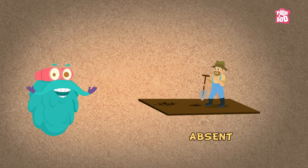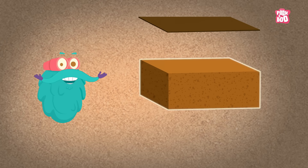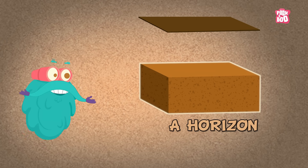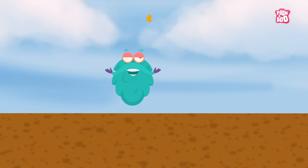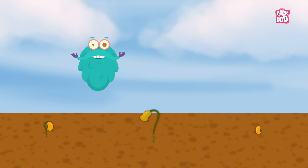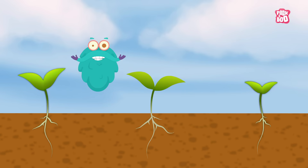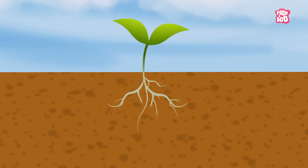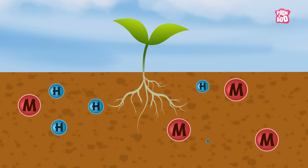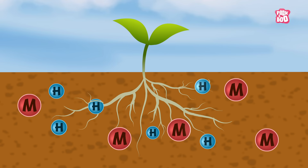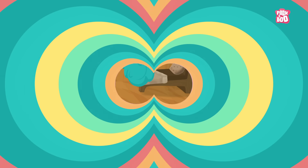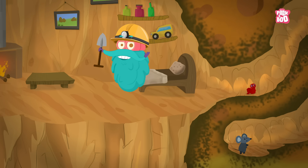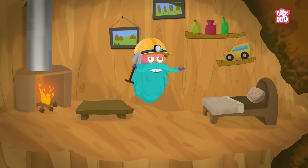thin or completely absent. Just below is the A-Horizon, also called the topsoil. This is where we plant our seeds, so they can grow to be strong, healthy plants. This is because it is rich in minerals and humus, it is soft and porous, so that plants can stretch their roots with ease.